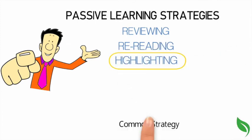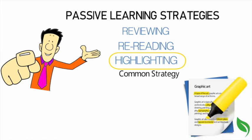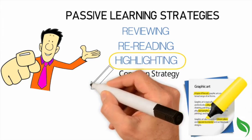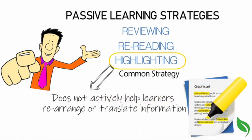Although highlighting is a very common strategy, learners often highlight too much or not enough information. Further, because highlighting does not actively help learners rearrange or translate information, it is less likely to be effective for encoding.